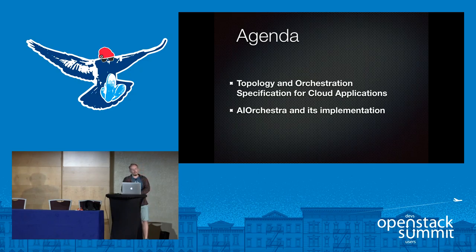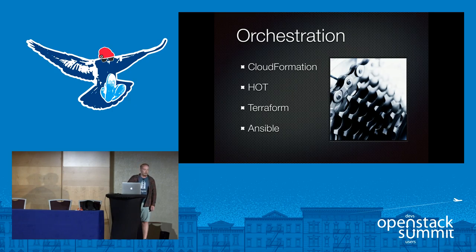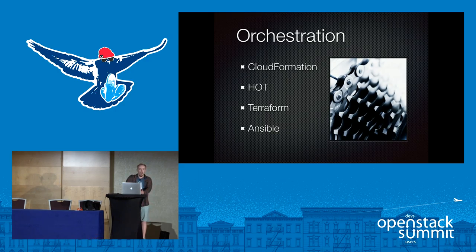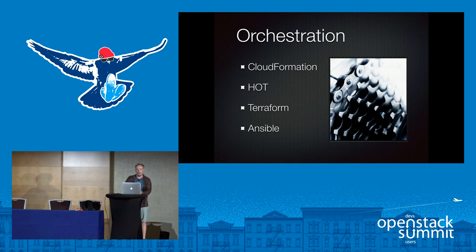Today we're going to talk a bit about Tosca — it's a Topology and Orchestration Specification for Cloud Applications — and iOrchestra and how it implements the Tosca spec. A bit of history on orchestration: starting when Amazon released their CloudFormation, templates for orchestration became a mainstream thing for building orchestration platforms. Heat was inspired by Amazon CloudFormation and they invented their own spec called HOT. Right after that, about a year ago, Terraform appeared, made by HashiCorp, and now we have Ansible that is capable of not only software orchestration but even cloud orchestration, starting from its latest release.